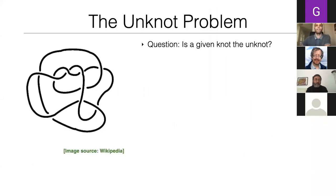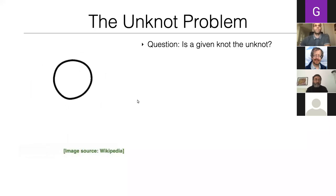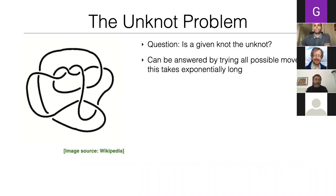The unknot problem simply asks: is a given knot the unknot? Given a knot — an embedding of a circle into three-dimensional space — is this the unknot? In some cases you can perform a series of moves to show it is. The question remains in more general cases. It's a yes/no decision problem but it's very hard, taking exponentially long, and this hardness can be quantified using complexity theory.